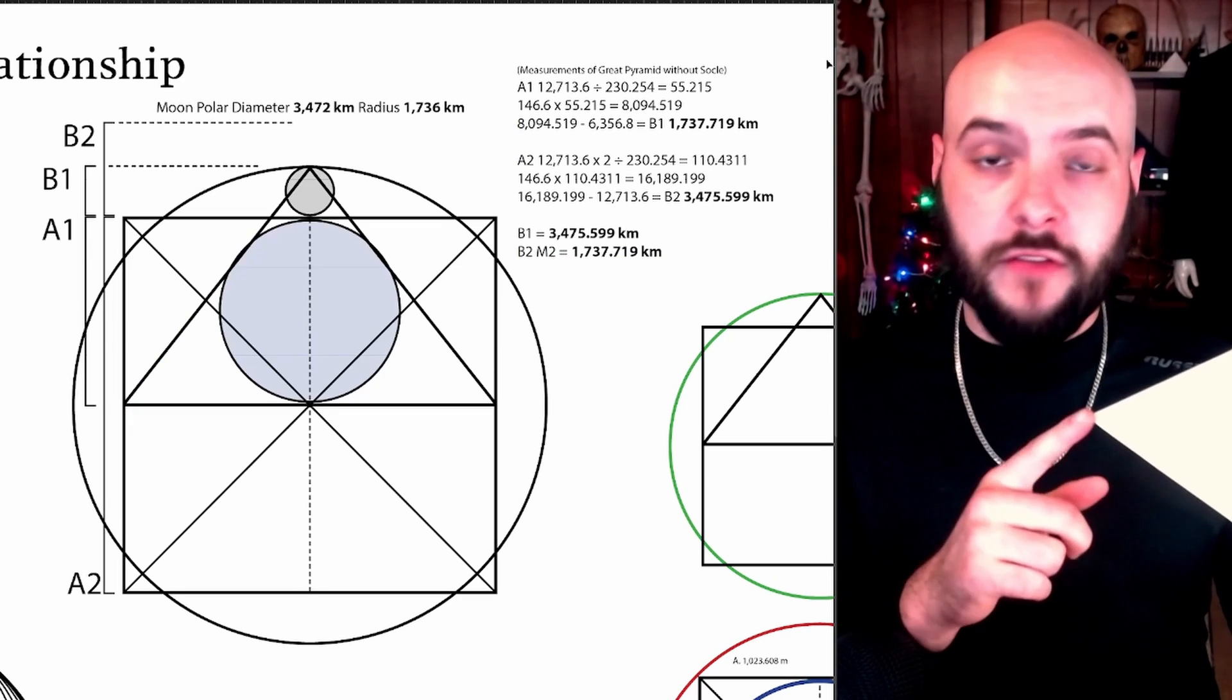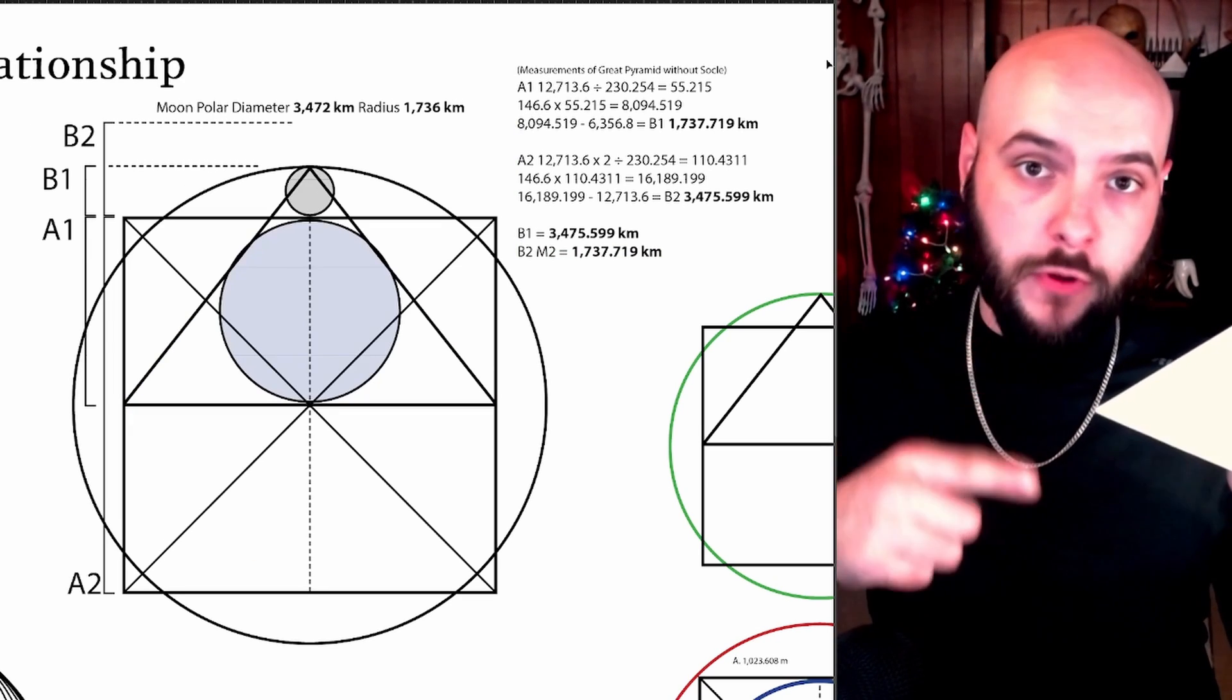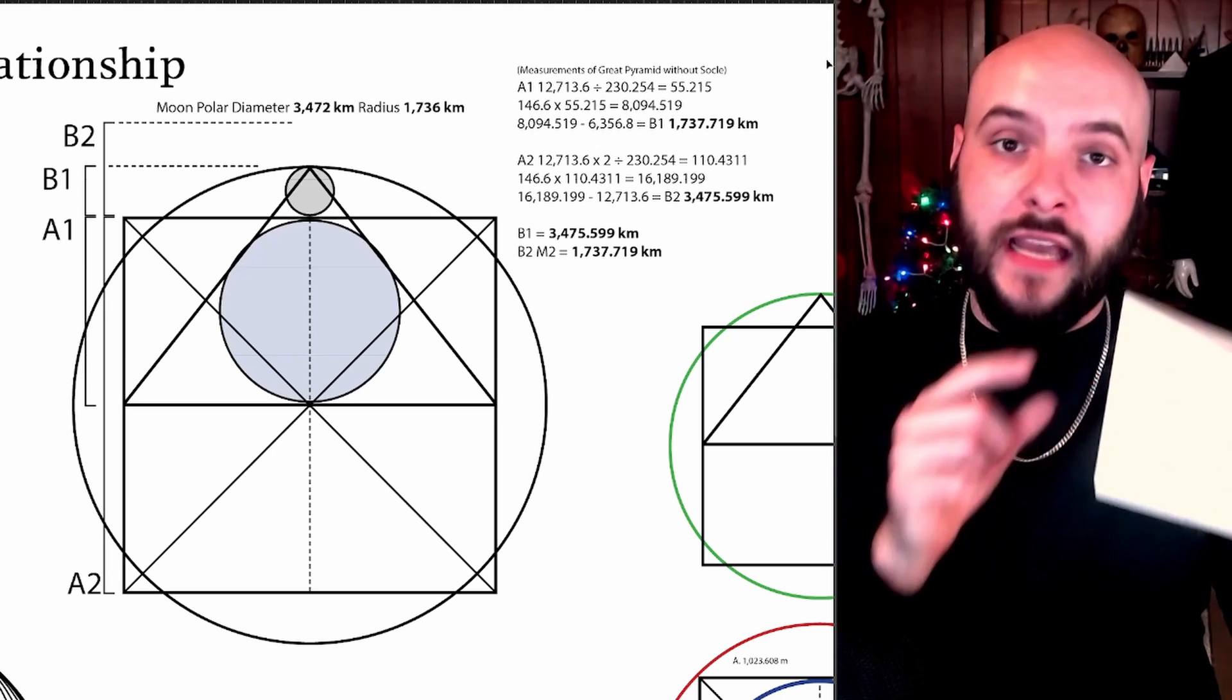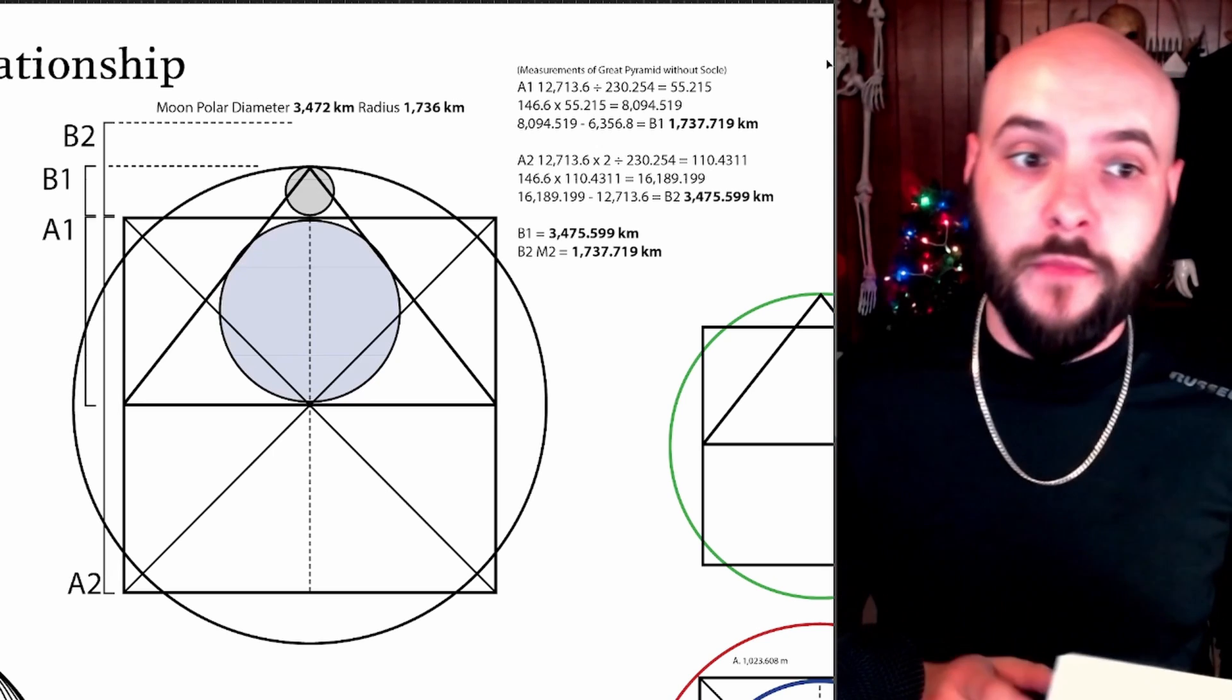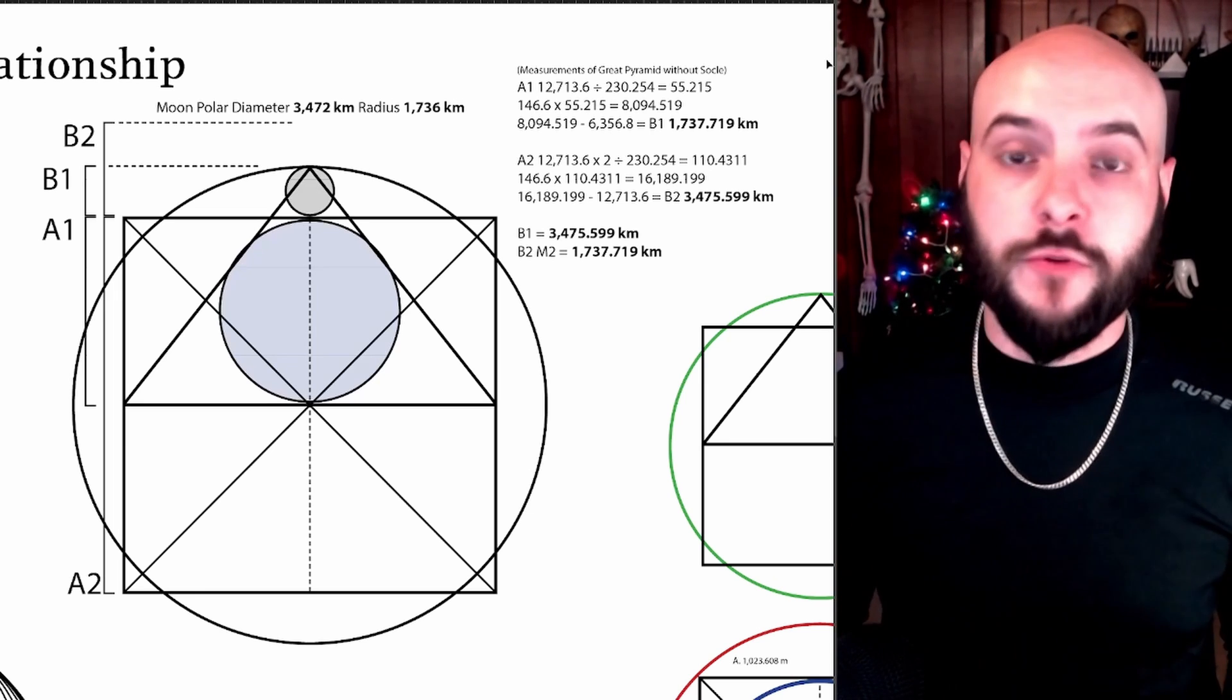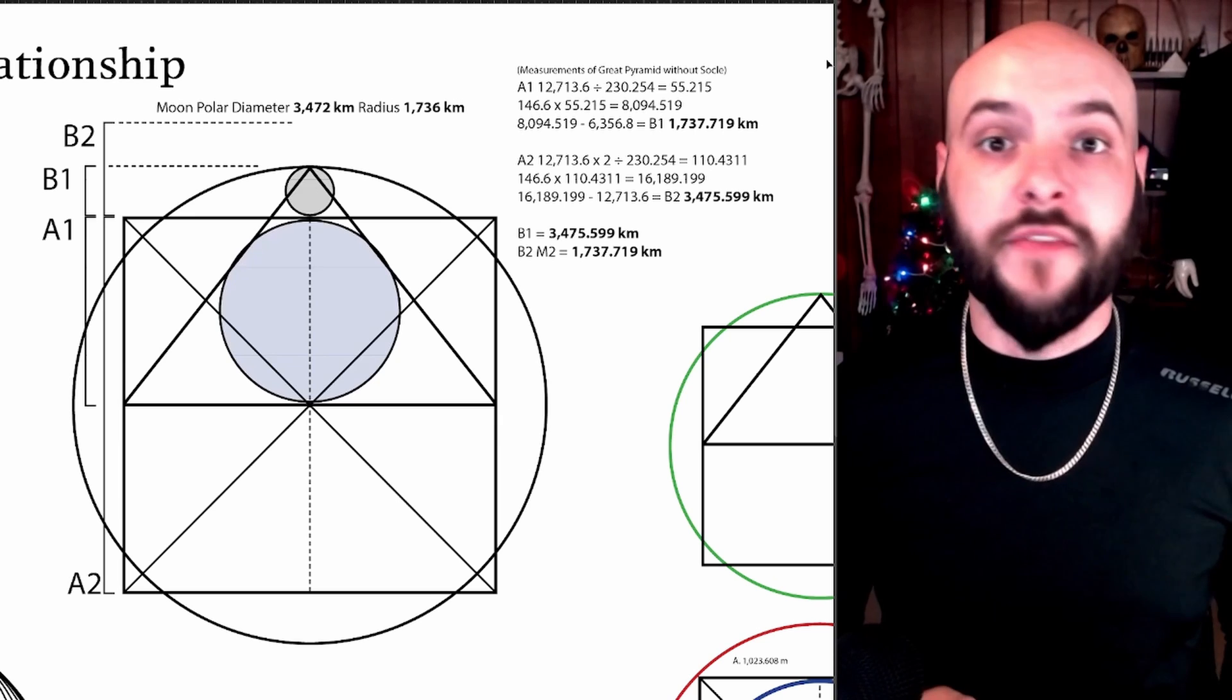It also works if we scale the Great Pyramid up to where half of the length of its base equals the polar diameter of the earth. The amount of its height that would then protrude out from its edge gives us the polar diameter of the moon being 3,475.599 kilometers, with the moon's actual polar radius being 3,472 kilometers.